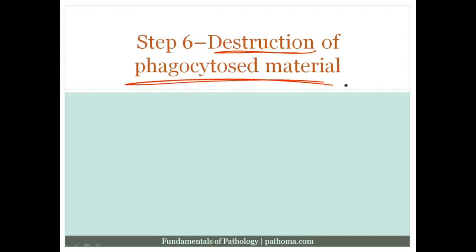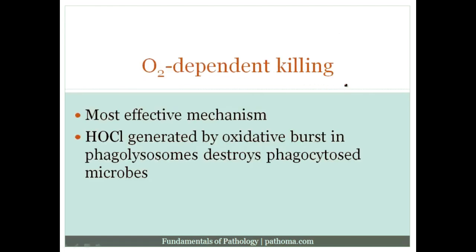The destruction of phagocytosed material can occur in two ways. There is an oxygen-dependent mechanism, which is actually the best mechanism of killing, and then there is an oxygen-independent mechanism. The oxygen-dependent mechanism is actually the most effective way by which killing occurs.